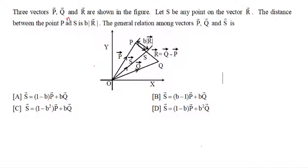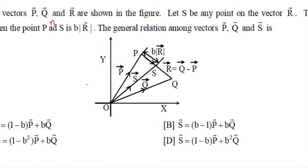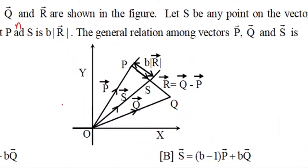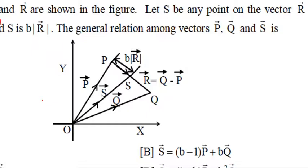This is a basic question on vector operations or simple vector subtraction. Just understand the motion we have by the diagram. First, vector P to Q is vector Q, and to S is vector S. The vector from P to S has magnitude b into R.